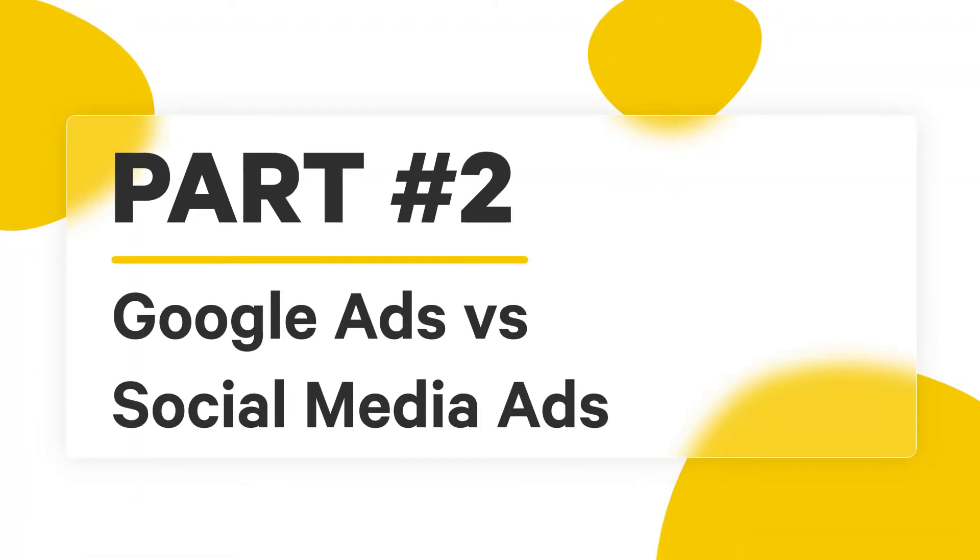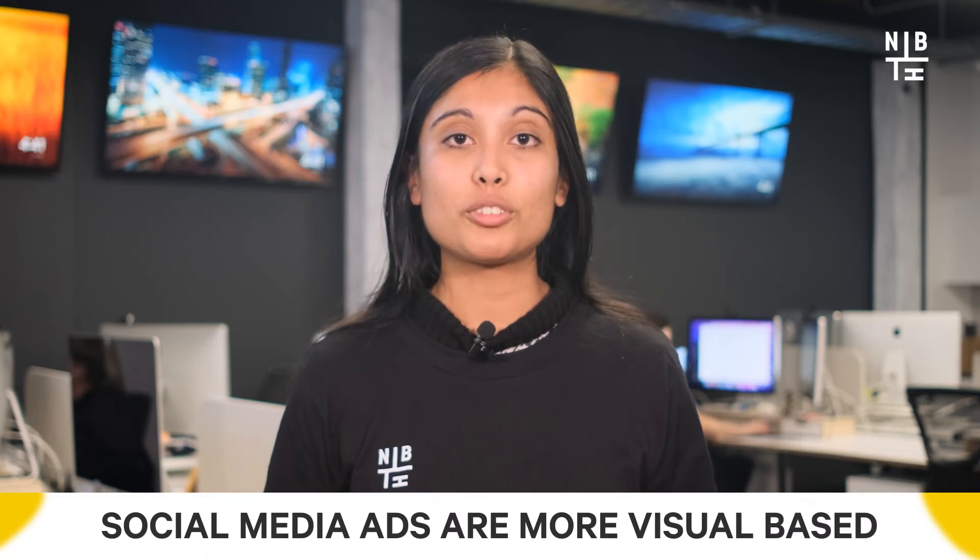On that note, it's worth looking at how Google ads weigh up against social media ads. These are paid ads on platforms such as Facebook, Twitter, Instagram, and LinkedIn. Social media platforms have a wealth of data on their users, meaning brands like yours can create targeted ads fairly easily. A noticeable difference between the two is that social media ads are more visual-based, especially when competing with all the other content on our social feeds.